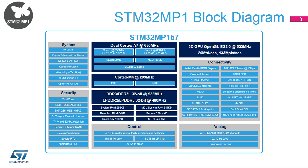The STM32 MP157 microprocessor integrates dual Cortex-A7 32-bit cores with single and double-precision floating-point units plus the ARM Neon Advanced SIMD instruction set, running at up to 650 MHz. Each core has a 32-kilobyte Level 1 instruction cache and a 32-kilobyte Level 1 data cache, plus 256 kilobytes of Level 2 cache shared between the two cores.